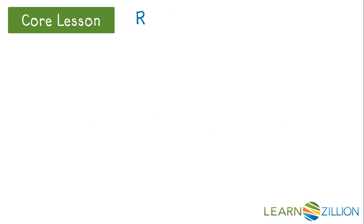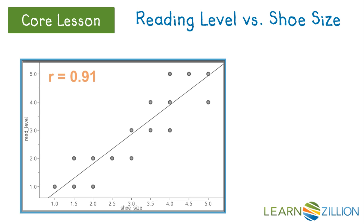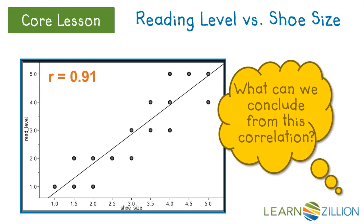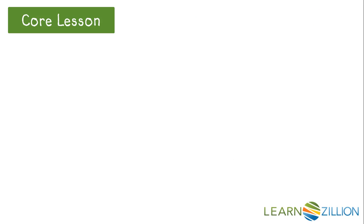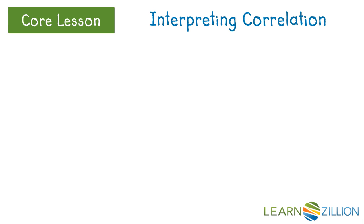Suppose we have data about reading level and shoe size and we calculate the correlation coefficient as .91. What can we say about this relationship? We must be really careful in interpreting a correlation because people often make errors in this important step. Specifically, people tend to suggest causality when they do not have evidence of a causal relationship.